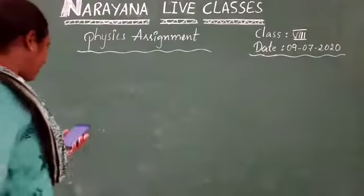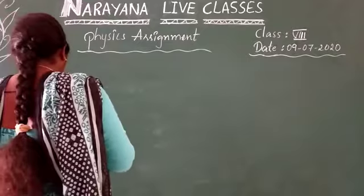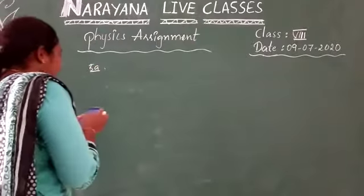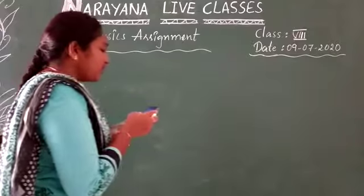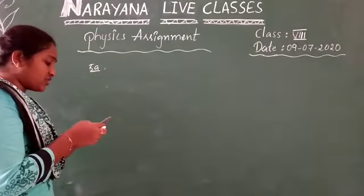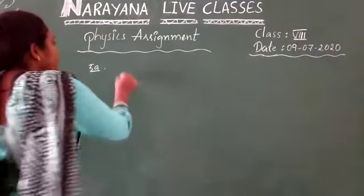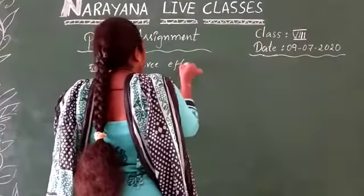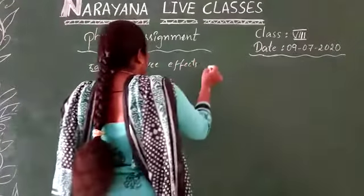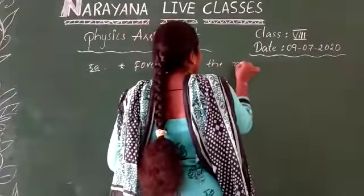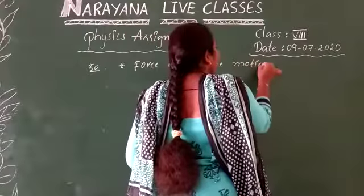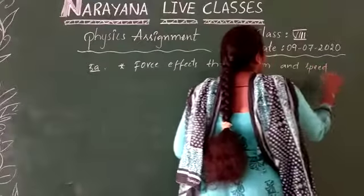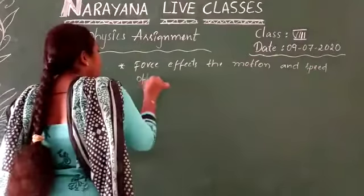And the fifth question: What observations and experiments can you cite to show the existence of friction? Yes. Force affects, first one. Force affects the motion and speed of an object.